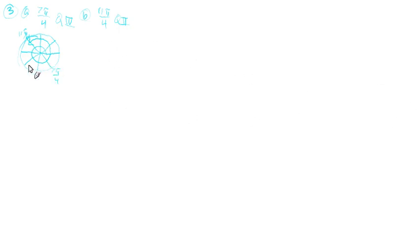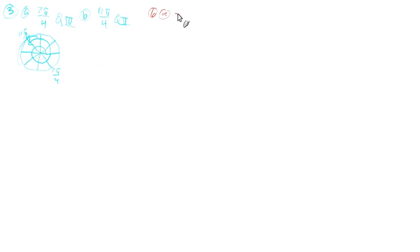Now for number 6 — really similar, except they don't have π in there, but it's still a number of radians. 3.5 radians — not 3.5π radians, just 3.5. So the number 3.5.